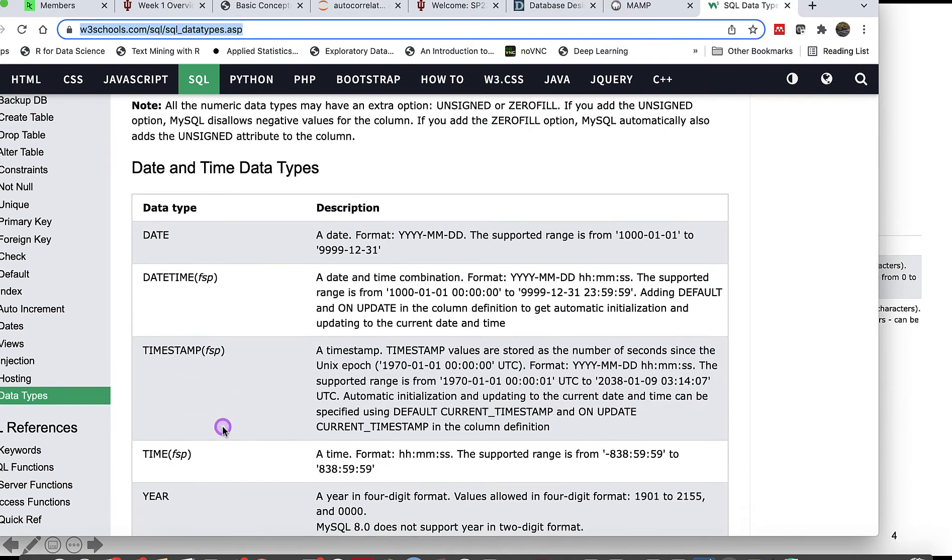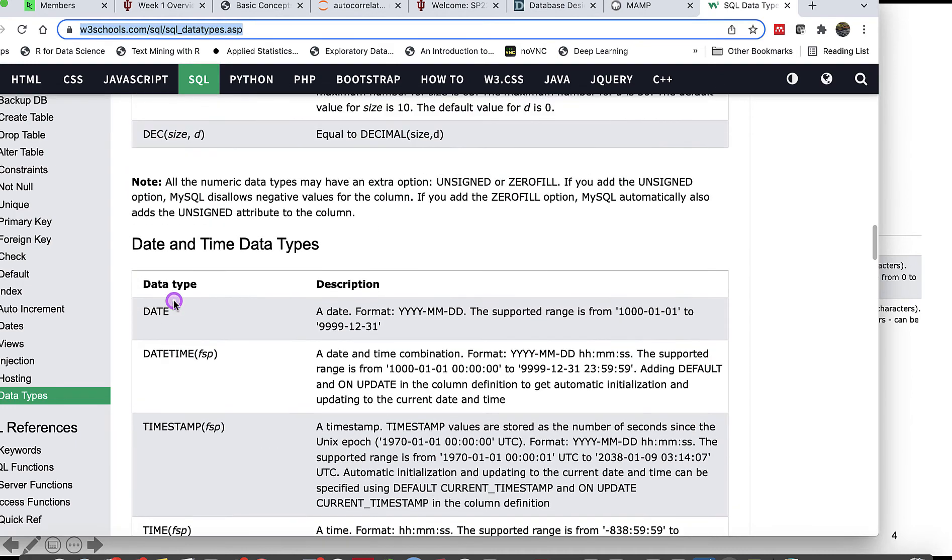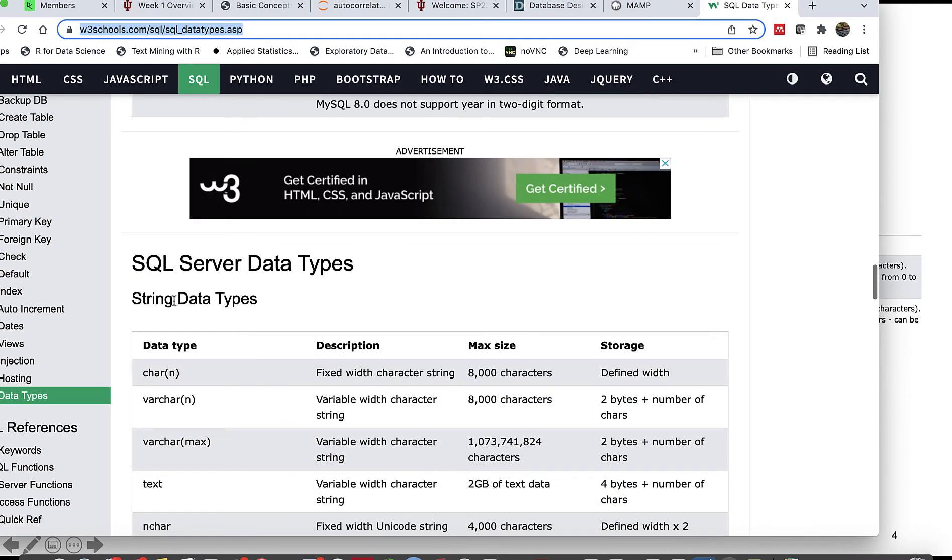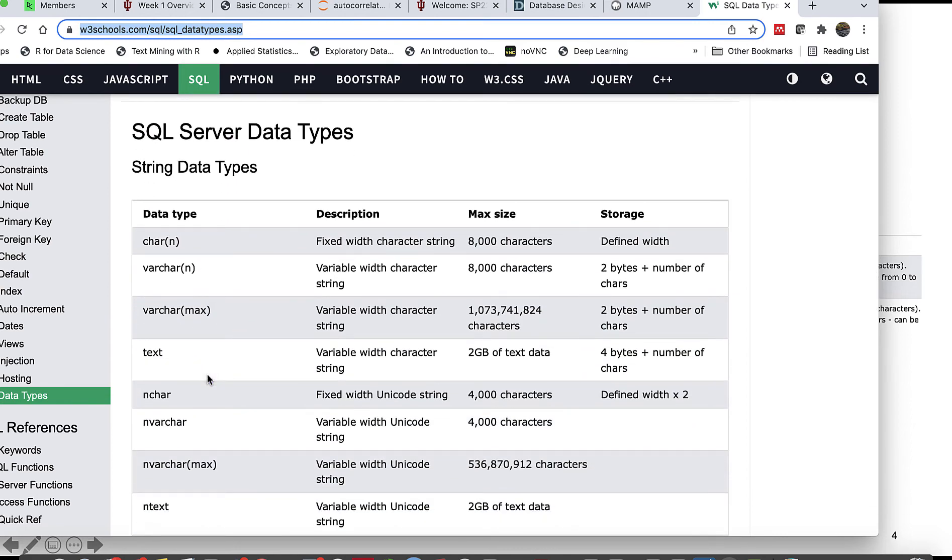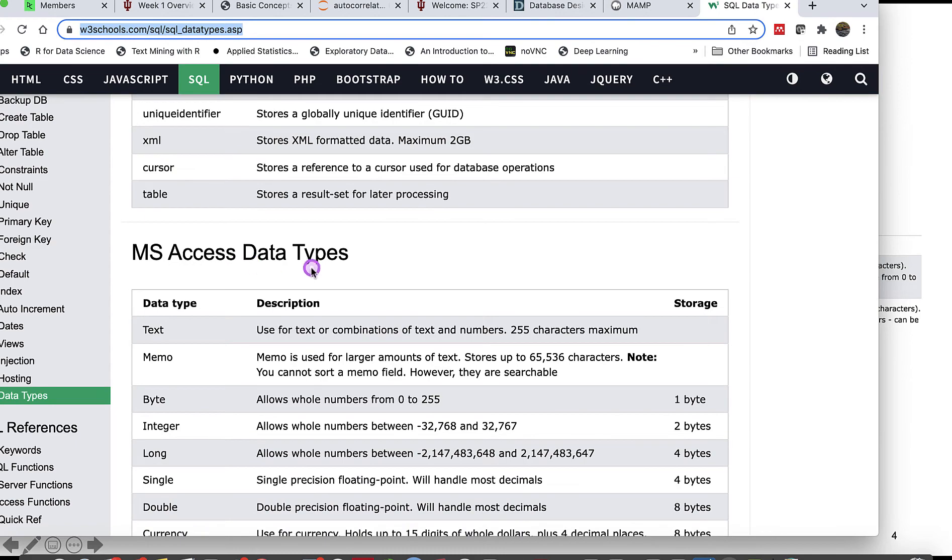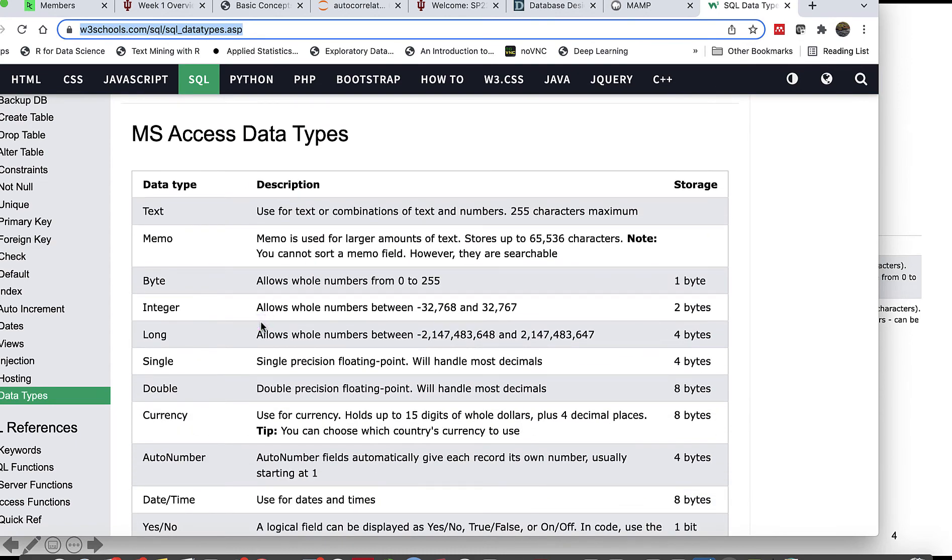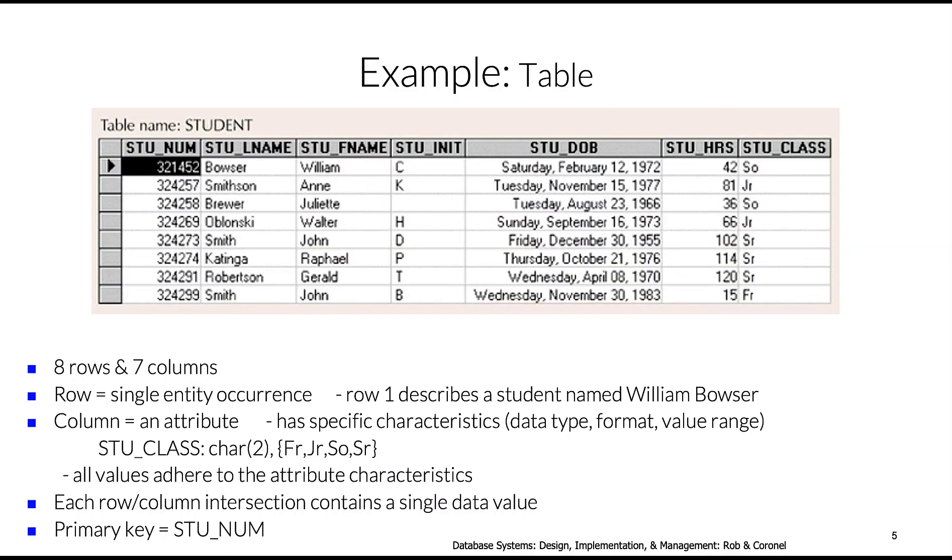Remember, this is from MySQL. If you're working with SQL Server data types, there's a slight difference in terms of max size and definition. If you're working with MS Access data types, there's another set of data type definitions and descriptions. Here's an example of a table, student, with eight rows and seven columns.